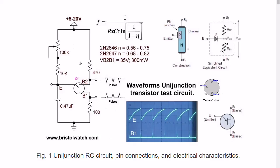The frequency of the pulse rate is by the formula R times C times the natural log of 1 divided by 1 minus n, and take the reciprocal of that result and it gives you the frequency. n is known as intrinsic standoff ratio, which we will cover momentarily.